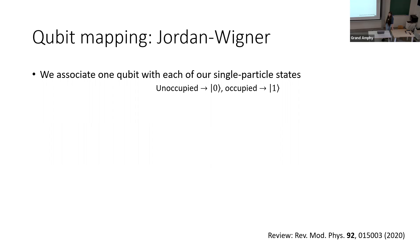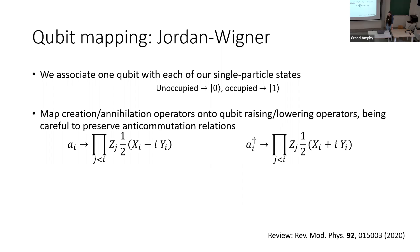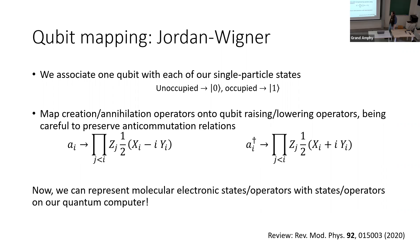Once we've moved to the second quantized picture, we need to map these problems onto a quantum computer. One very common mapping is the Jordan-Wigner mapping. We associate one qubit with each single particle state, with the simple identification that unoccupied states have qubit state zero and occupied states have qubit state one. We then map creation and annihilation operators onto qubit raising and lowering operators, while preserving anti-commutation relations using Z strings.